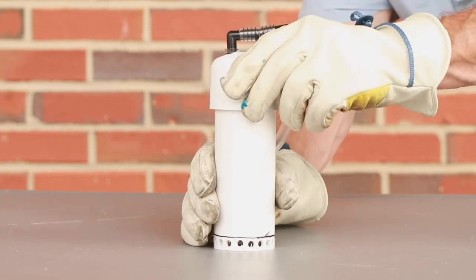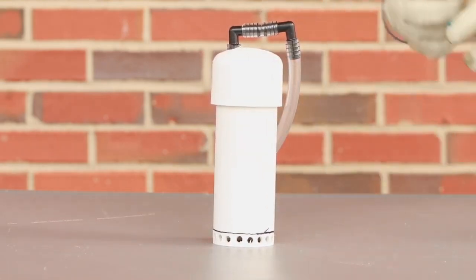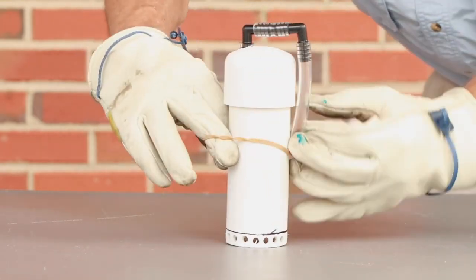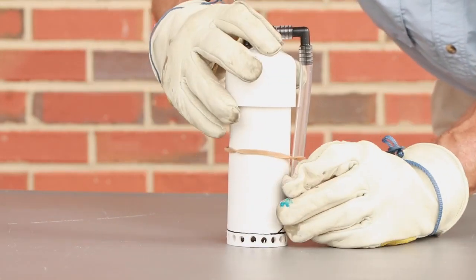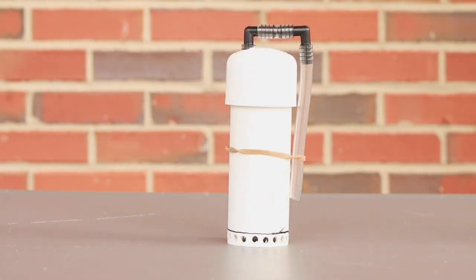Place the cap assembly on the top of the 6 inch pipe to complete the bell siphon. You may want to add a rubber band or Velcro strip around the vertical pipe to secure the down facing air inlet hose.